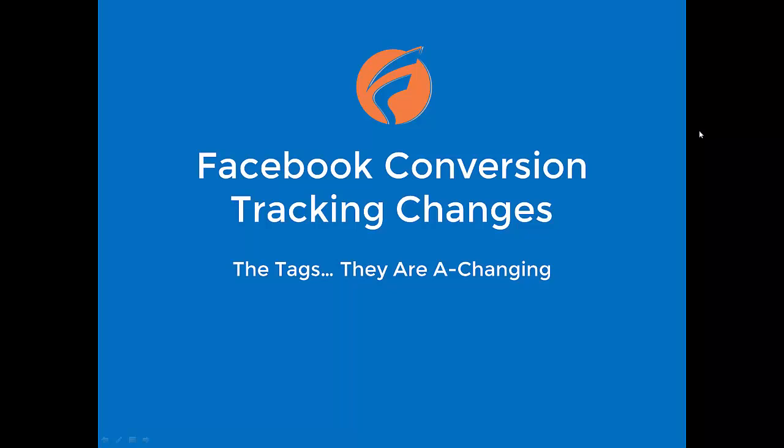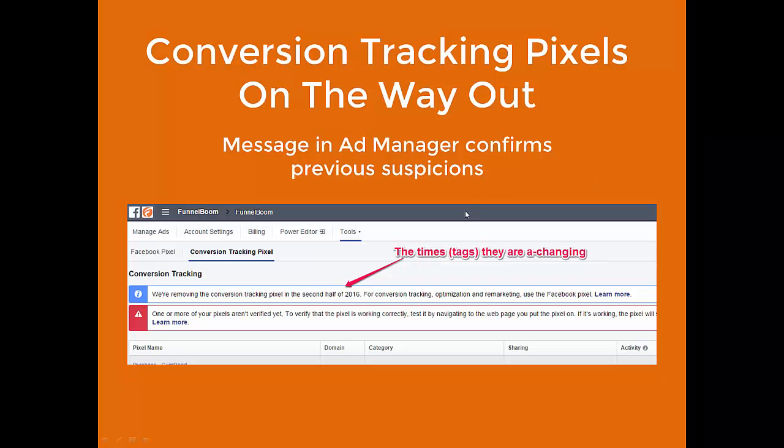Let's get into the changes we're seeing and how they might impact you, whether good or bad. First, it looks like conversion tracking pixels are all officially on the way out. I logged into my ad manager today and went to the pixels section under conversion tracking. If you've run Facebook ads for a while, you know this is the legacy way to track conversions — you create a separate tracking pixel for each event. Facebook started moving away from this when they introduced the new website custom audience pixel, which they're now calling the Facebook pixel.